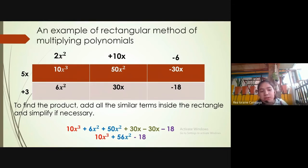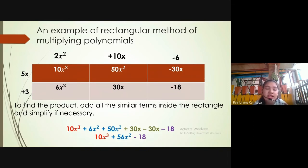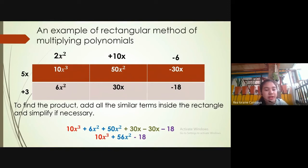Next, positive 3 times 2x squared gives 6x squared. Then positive 3 times positive 10x gives 30x. Lastly, positive 3 times negative 6 gives negative 18. To find the product, add all the similar terms inside the rectangle and simplify if necessary.